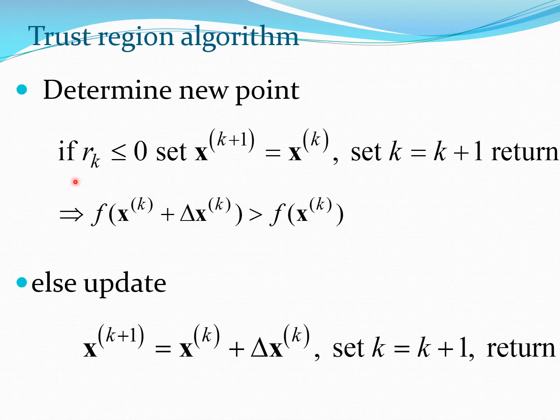Then we determine the next point or the new point. Now there is a peculiar case if rk is less than 0 which means your function value is actually going up as predicted by the approximation. In that case you just set xk plus 1 is xk which is basically you don't move forward. Set k is k plus 1 and return. So in that case your next function value is greater than your current value and essentially you don't want to move.